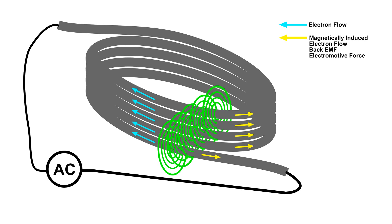So that magnetic field cutting all those coils — and it's the same wire — it is actually producing a current in the other direction, resisting the flow of the current from our AC source.